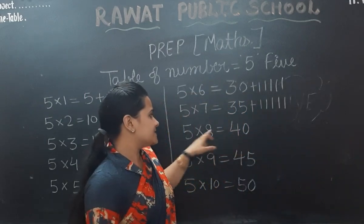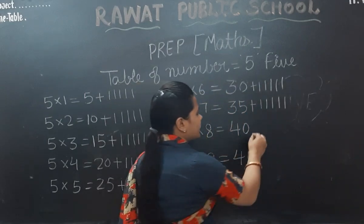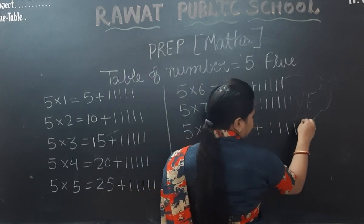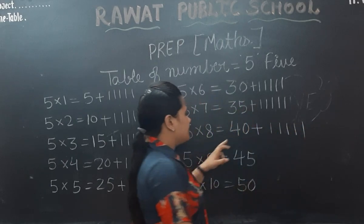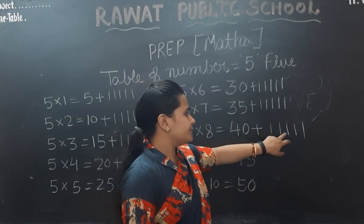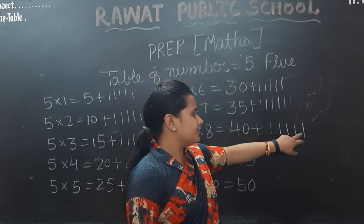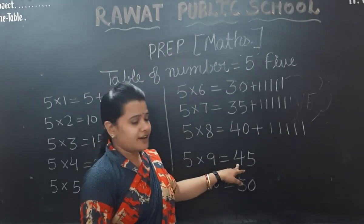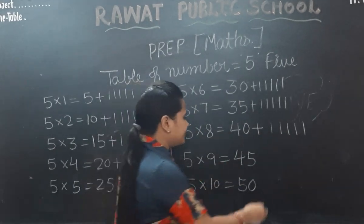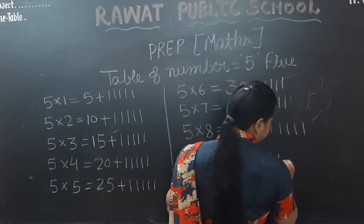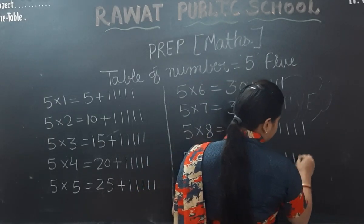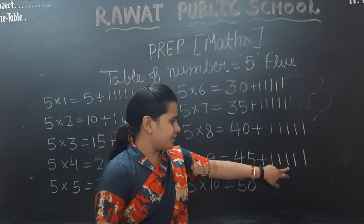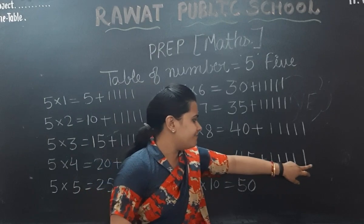40 again. 5 times 9, jump. 40, 41, 42, 43, 44, 45. 5 times 9, jump — 45. 5 times 10, what is? 45, 46, 47, 48, 49, 50.